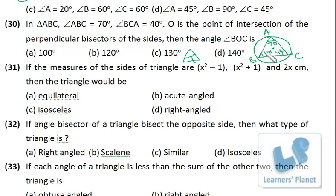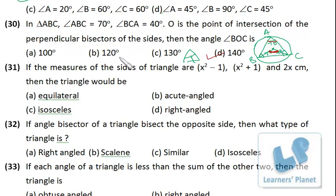Now we have to find out angle BOC. So it is angle BOC. From this arc, this is the angle at the center, and from the same arc, this is the angle at the circumference. So the angle at the center must be double the angle at the circumference.